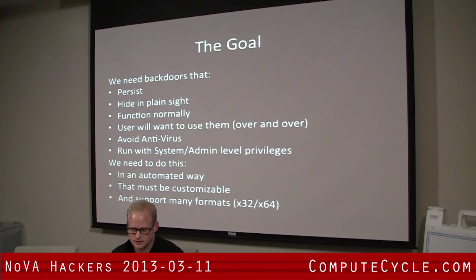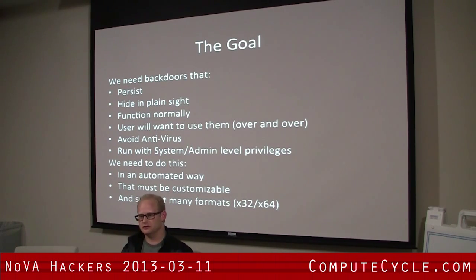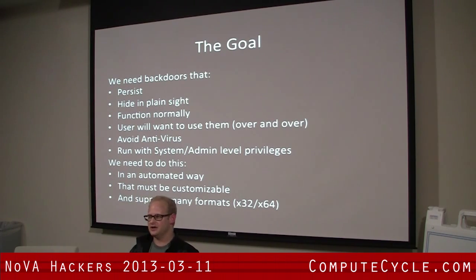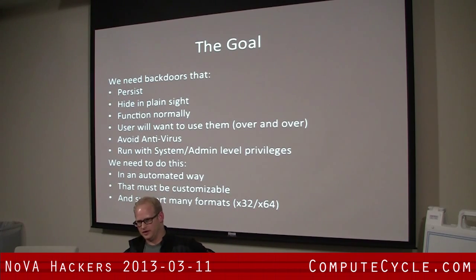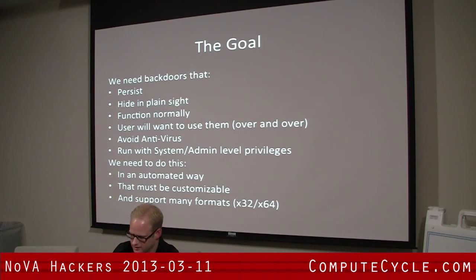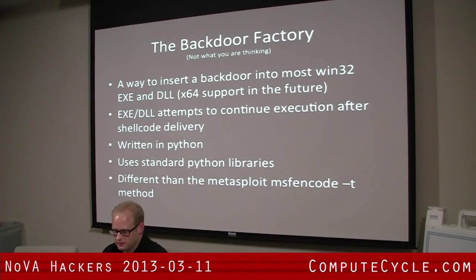The easiest way to do this is to write a script so it's automated and customizable. When I used to do this by hand, the fastest I could manage was ten minutes, and that was on an executable with no import tables. Once you have an import table, you have to change the PE header, and it gets complicated because you're doing math in hex. So the solution is to use the Backdoor Factory — a script I wrote.